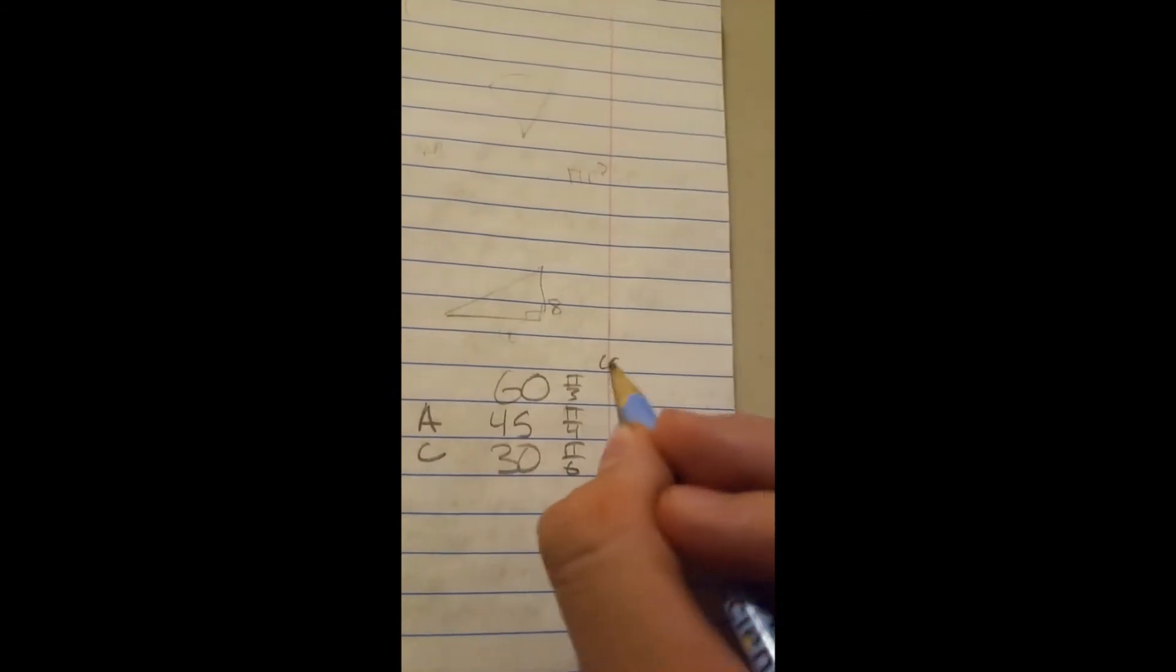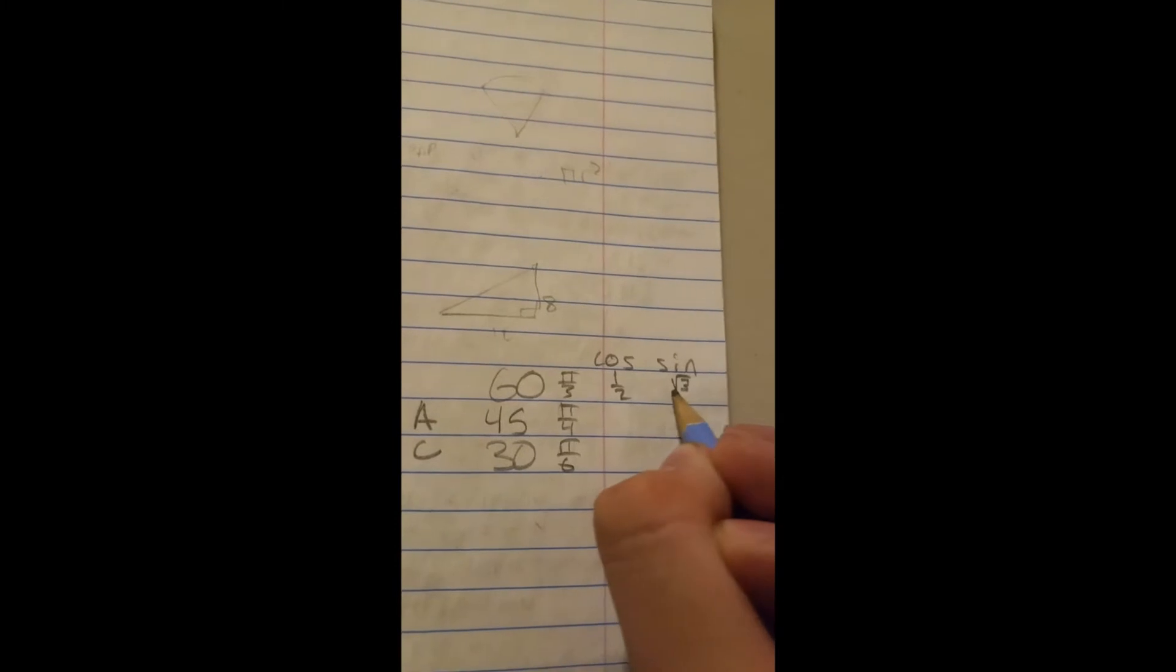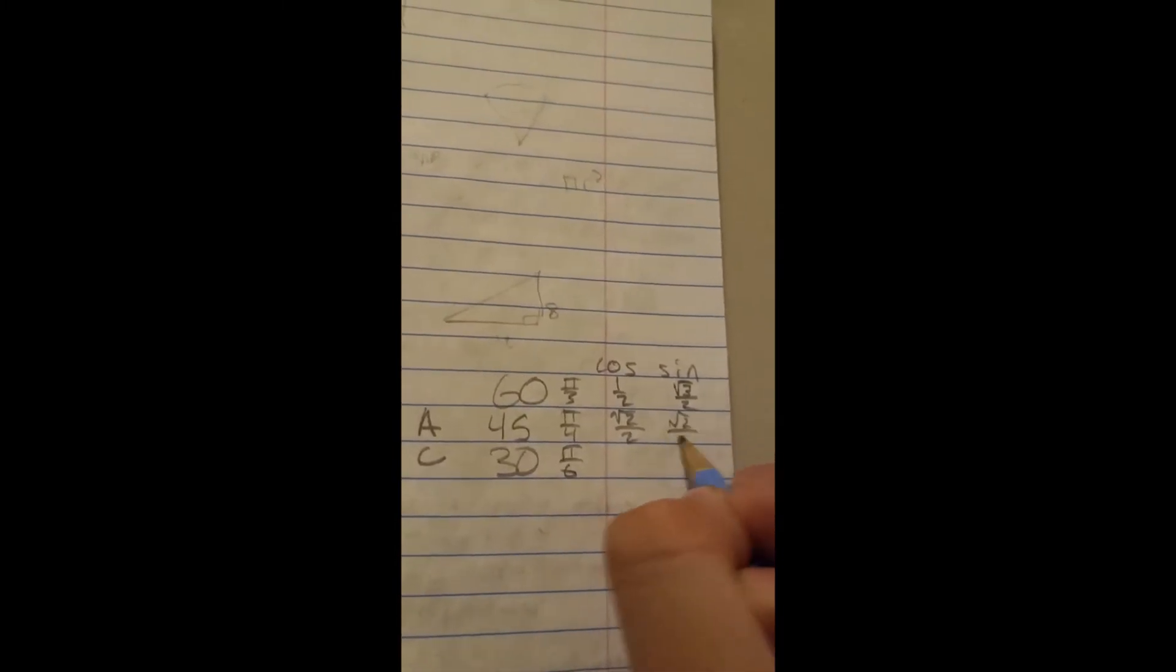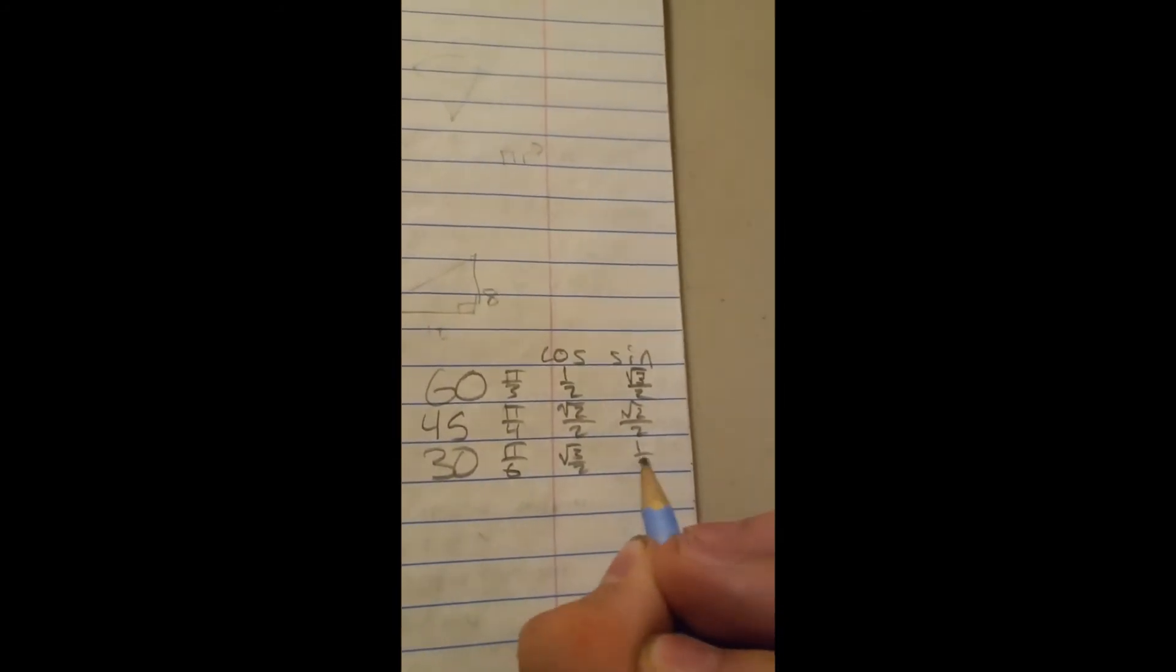These are for cosine and sine: one half, root 3 over 2, root 2 over 2, or root 2 over 2 for both cosine and sine, root 3 over 2, and one half.